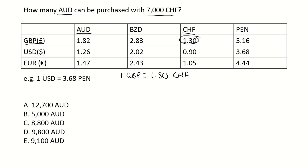Now we want 7,000 CHF. The easiest thing to do is to get 1 CHF on its own and then multiply by 7,000. To get 1 on its own, we just divide by 1.30 — so 1.30 divided by 1.30 gives us 1 — and we do the same on the other side too. So we end up with 1 CHF equals 1 over 1.3 GBP.